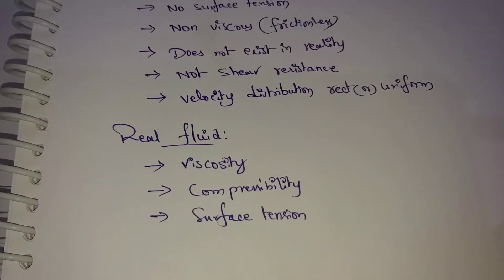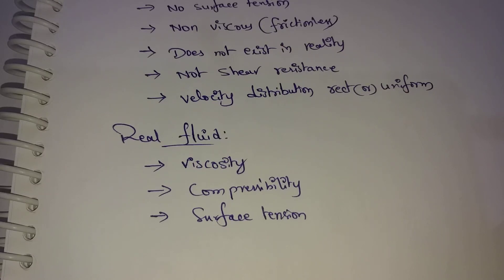Next, Real Fluids. Every fluid is a real fluid — ideal fluid is just an assumption. Real fluid contains viscosity, compressibility, and surface tension. Surface tension is present in every real fluid. Most all fluid properties can be applied to real fluids.